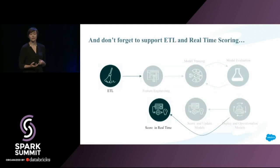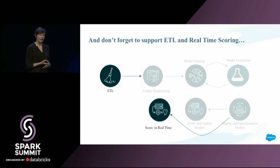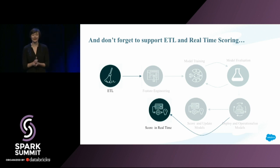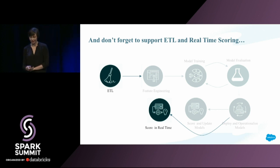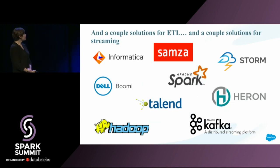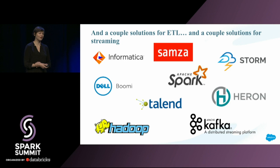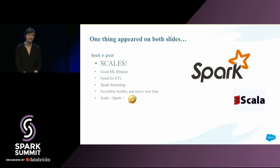This diagram is not the full picture. Before feature engineering you have to do ETL — get your data into the right form. It turns out everyone wants real-time predictions, and there are legitimately use cases where if you can't produce predictions in real-time your model isn't valuable. Another search of the internet reveals many solutions for ETL and real-time. If you're smart, you may have noticed that one thing appeared on both of those slides: Spark.